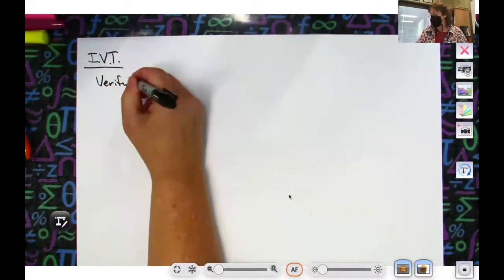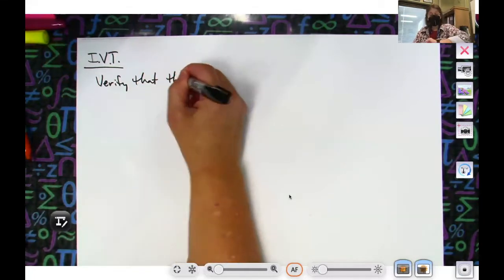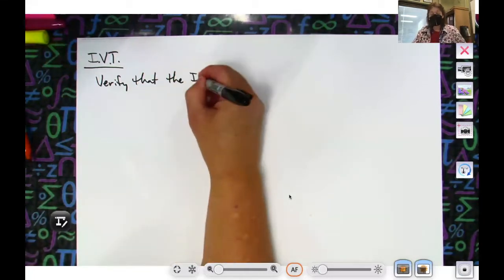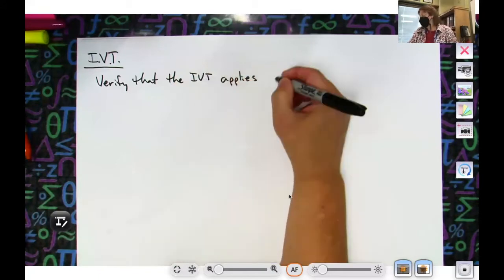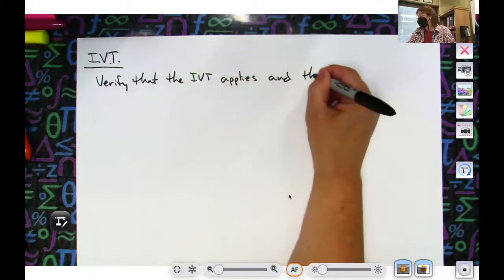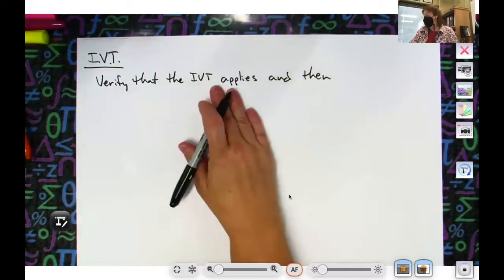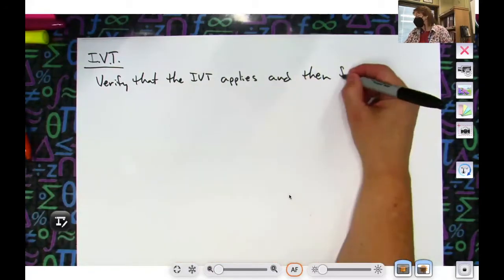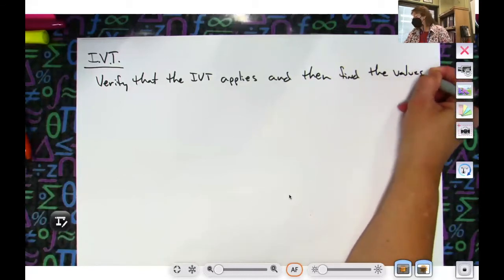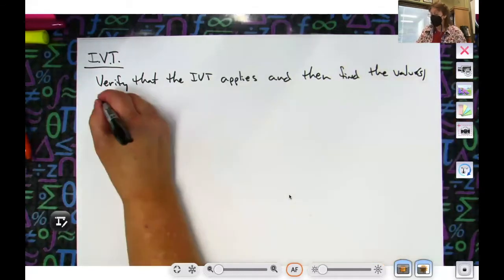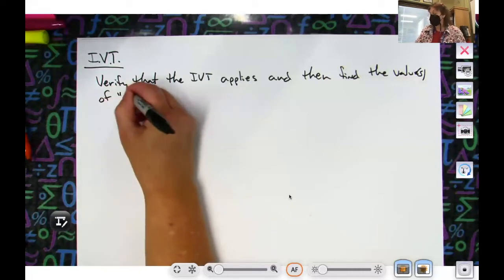Alright, so they're going to very specifically tell you to verify that the intermediate value theorem applies, and then find the value or values of C guaranteed by the theorem.